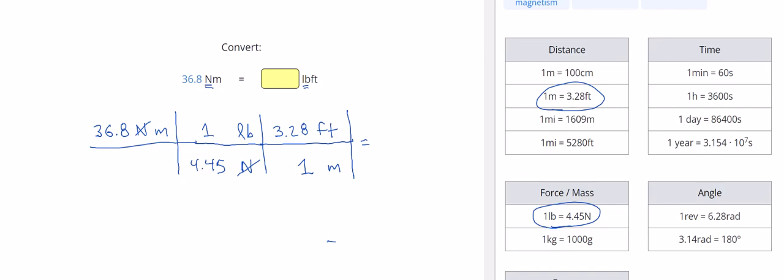And that gives me 27.12. Keeping three significant figures, you can keep more if you'd like but three at least, so 27.1 and pound-feet was my answer because those ones did not cancel out. Let me go ahead and plug that in, and we got it.